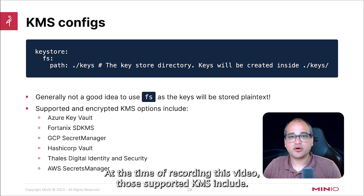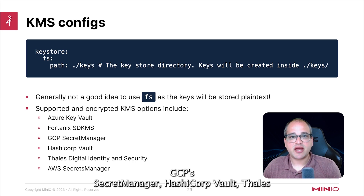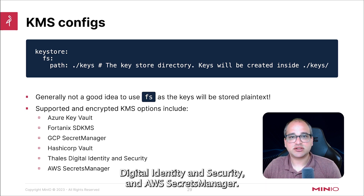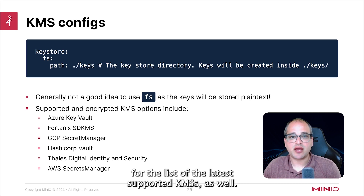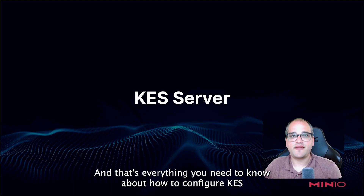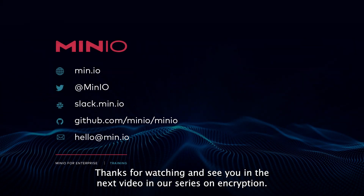At the time of recording this video, those supported KMSs include Azure Key Vault, Fortanix SD KMS, GCP's Secret Manager, HashiCorp Vault, TALES Digital Identity and Security, and AWS Secrets Manager. You can check the KES documentation on our website for the list of the latest supported KMSs as well. And that's everything you need to know about how to configure KES and KMS for encryption in MinIO. Thanks for watching and see you in the next video in our series on encryption.